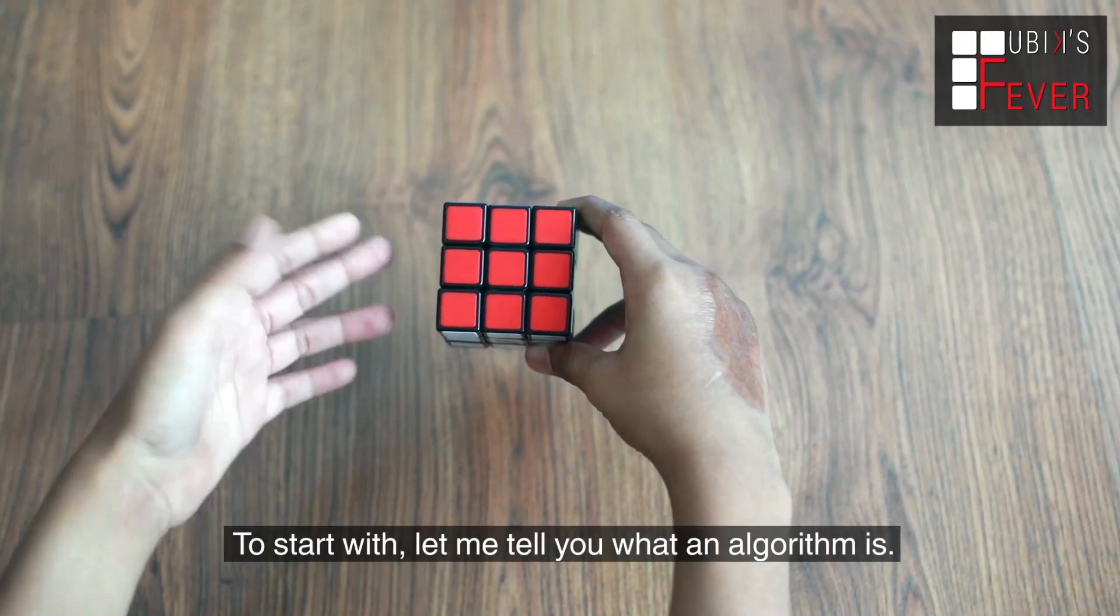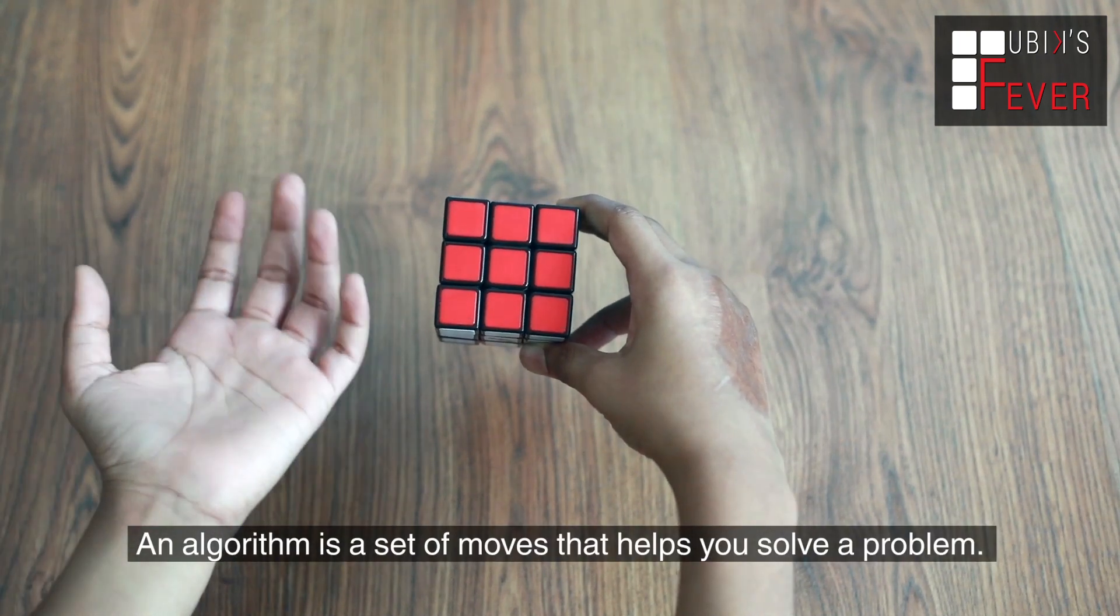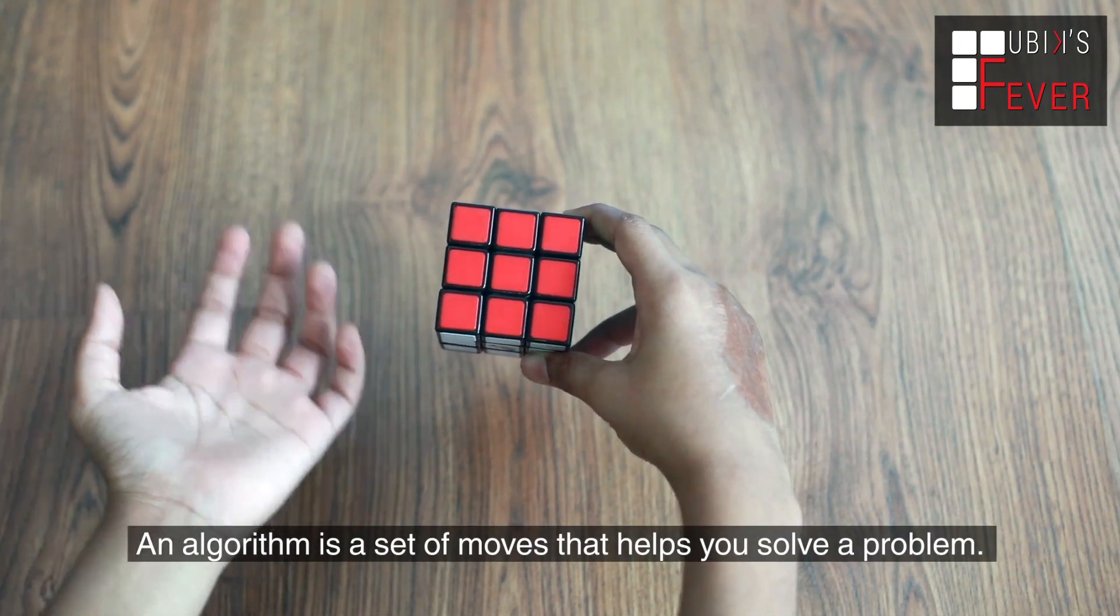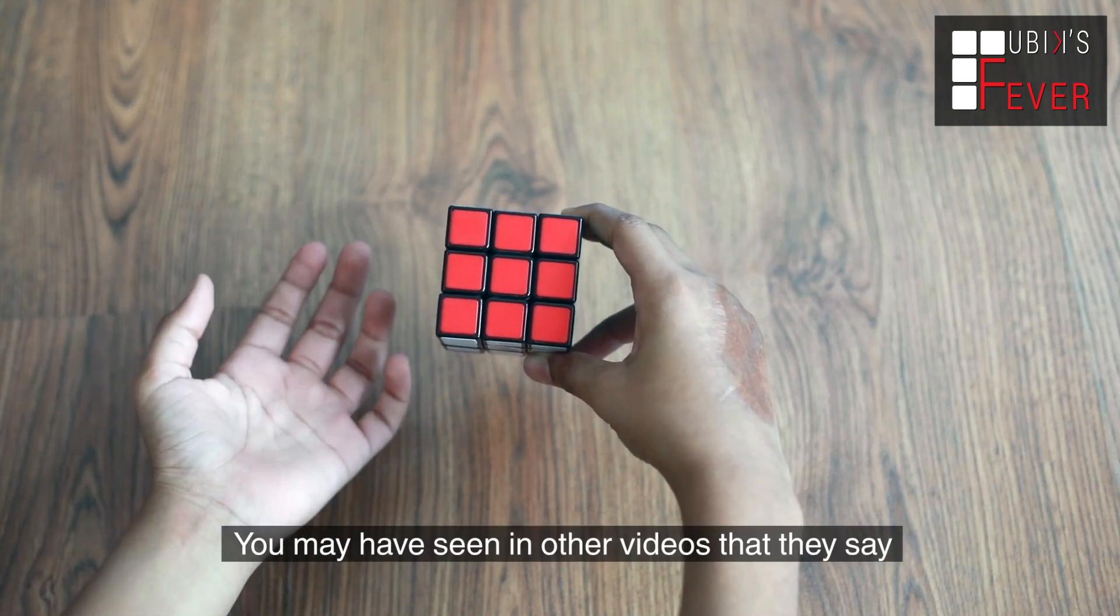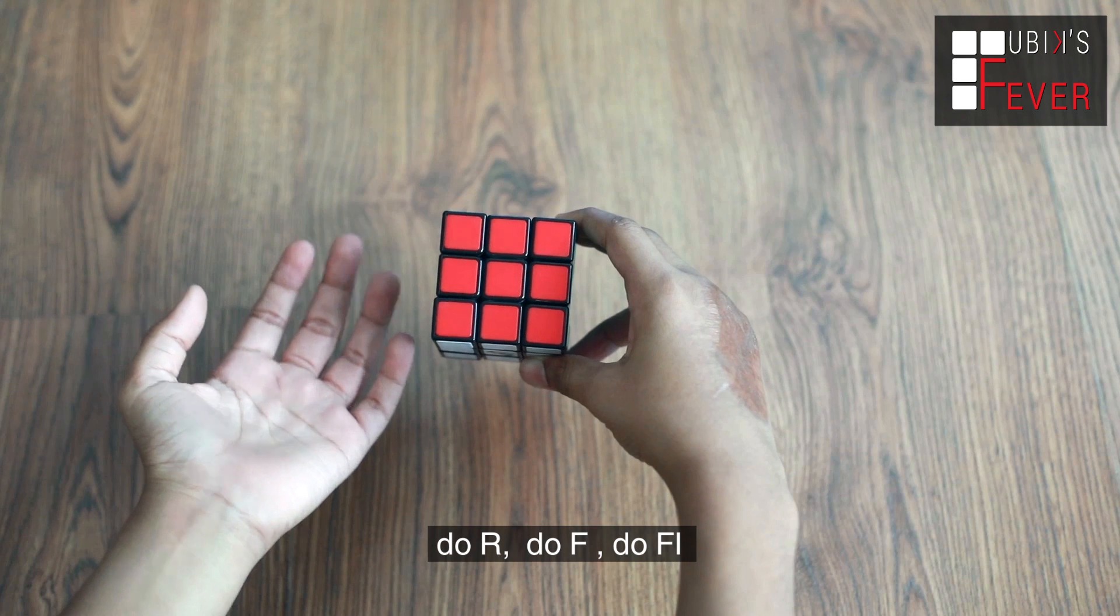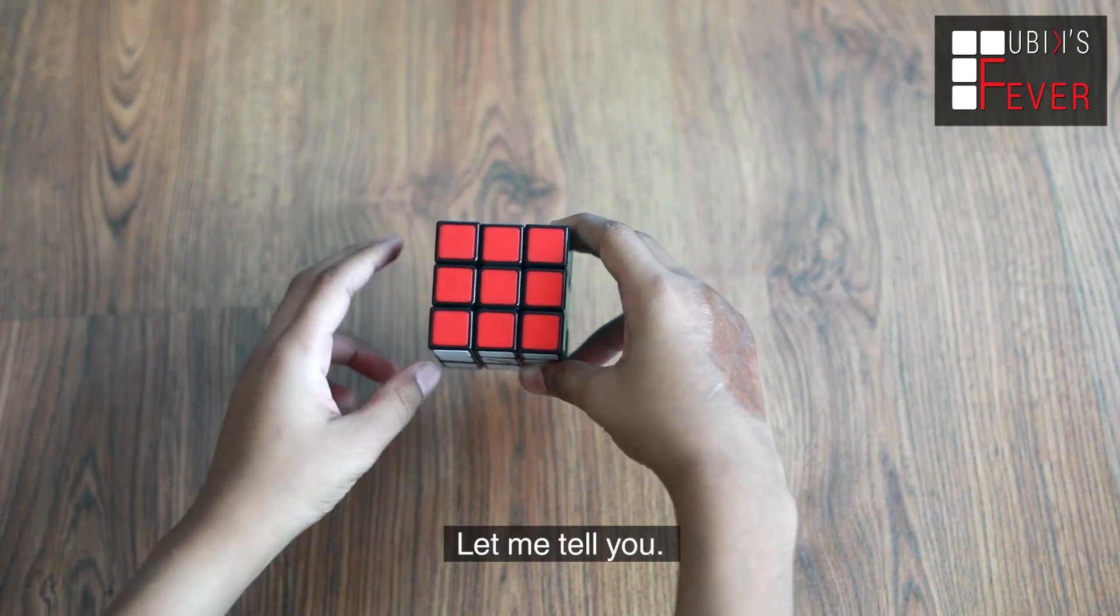To start with, let me tell you what an algorithm is. An algorithm is a set of moves that helps you solve a problem. You may have seen in other videos that they say, do R, do F, do FI. So, what are these? Let me tell you.